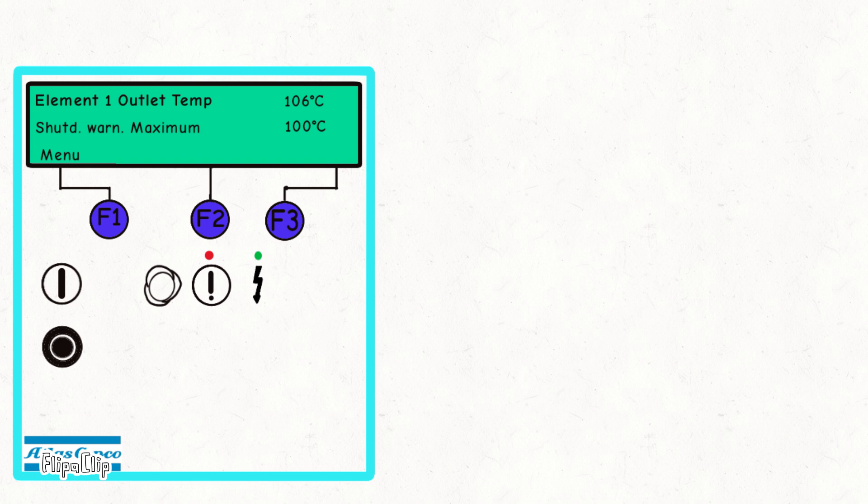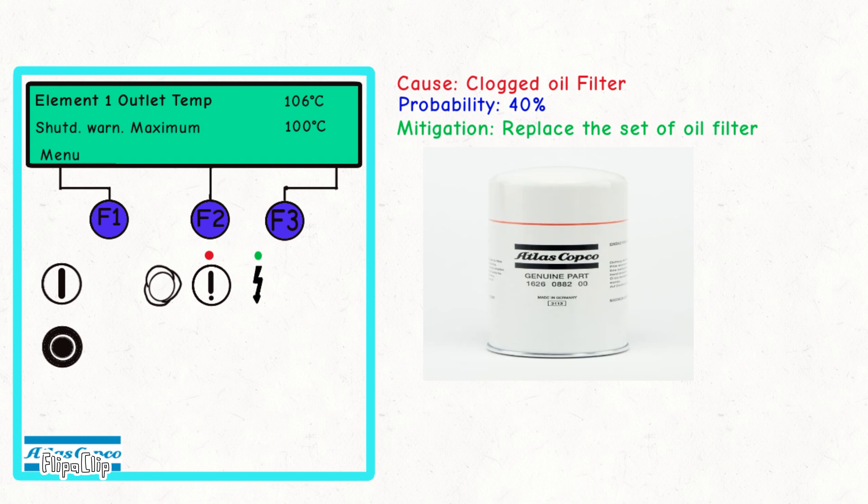One of the primary causes of high element temperature is a clogged oil filter, with a probability of 40%. When the oil filter is clogged, oil flow is restricted, leading to overheating. To mitigate this, it's important to replace the oil filter promptly.